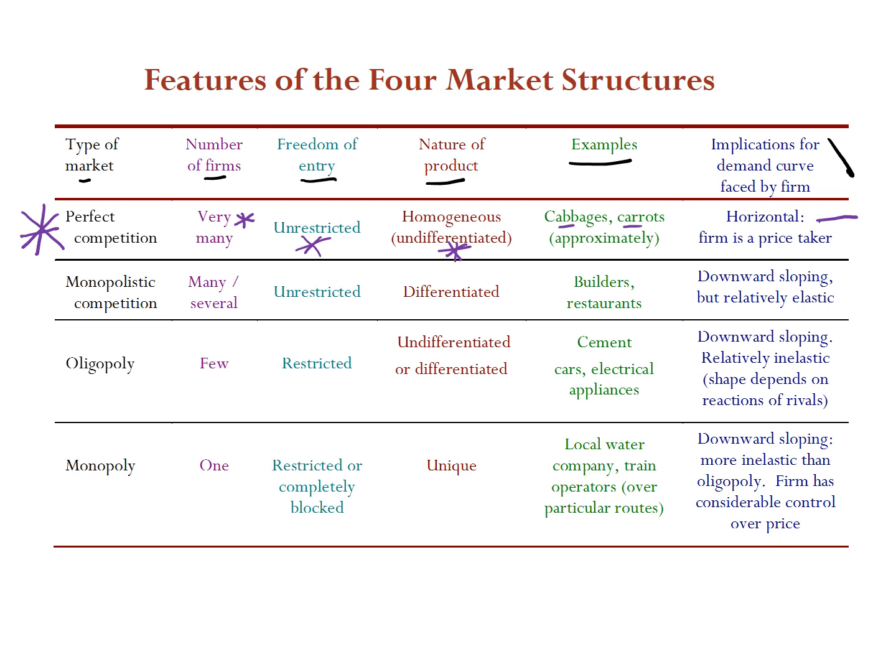Because everyone sells the same product at the same price, the demand curve is horizontal — perfectly elastic. If you try to raise your price there will be an infinite reaction: people will leave your product because everyone else is selling the same thing. So firms in perfect competition are price takers.